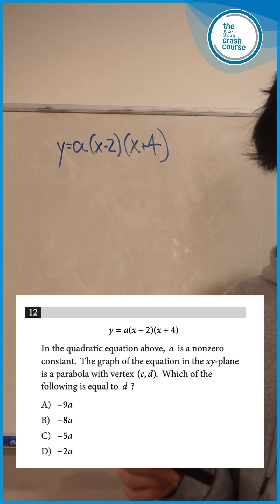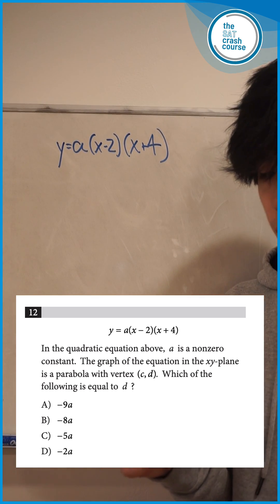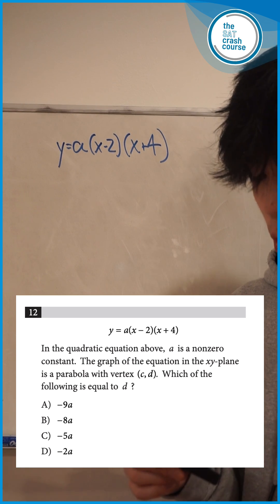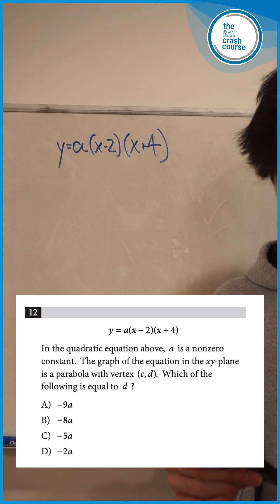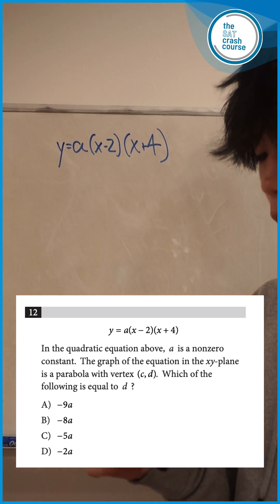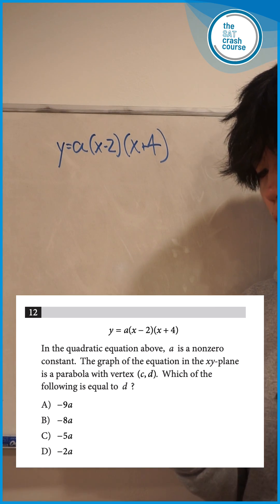Question 12. In the quadratic equation above, a is a non-zero constant. The graph of the equation in the xy-plane is a parabola with vertex (c, d). Which of the following is equal to d?